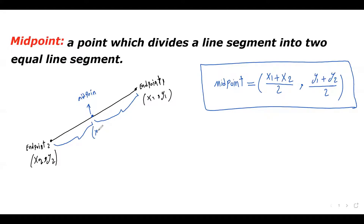I am trying to find the x and y coordinate for the midpoint. Here is the formula: the formula for midpoint is (x1 + x2) divided by 2 for the x coordinate, and (y1 + y2) divided by 2 for the y coordinate. Basically, what we are doing is finding the average, or the middle, of these two points. That's why this is our formula.